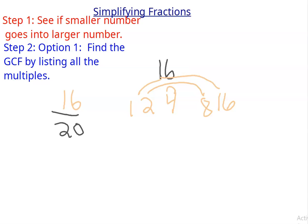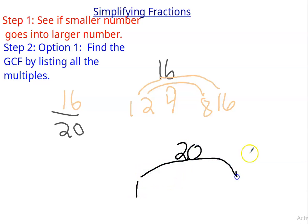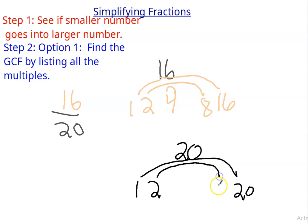Now let me list my factors of 20. Does 1 go into 20? Yes, 1 goes into everything — 1 times 20. Does 2 go? Yes, 2 goes because 20 is even — 2 times 10. Does 3 go? No. 4? Yes — 4 times 5.